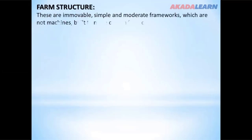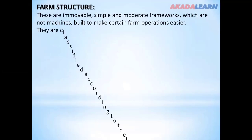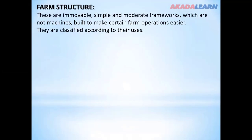Farm structures are immovable, simple and moderate frameworks which are not machines, built to make certain farm operations easier. They are classified according to their uses.